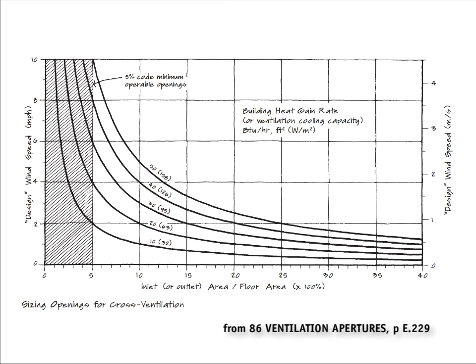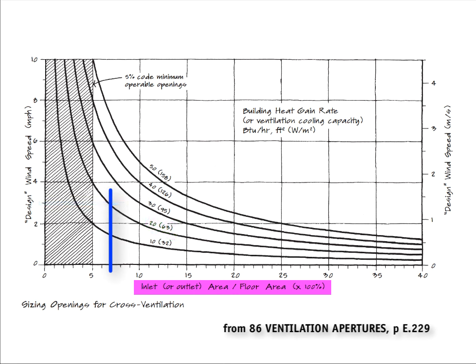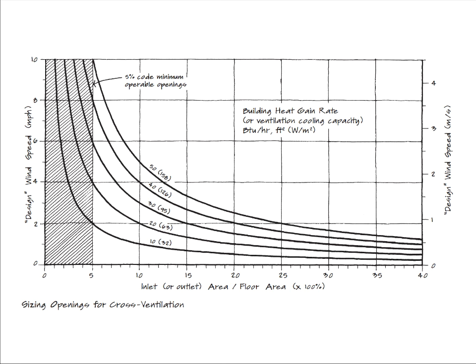Once you know the design wind speed, enter it on the vertical axis, travel horizontally until you meet the curve for the building heat gain rate, then drop down to find the inlet or outlet area as a ratio of floor area. For instance, 10% means 10% of the floor area in inlets and another 10% in outlets. Multiply that ratio by the floor area to find the actual inlet or outlet area. Remember that outlets need to be at least as large as the inlets.